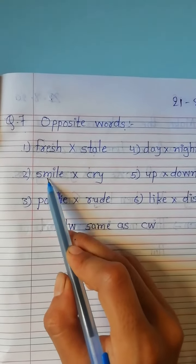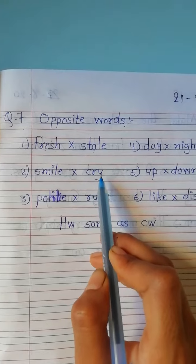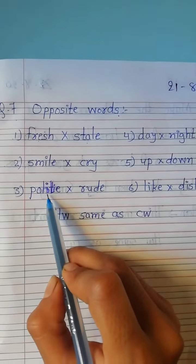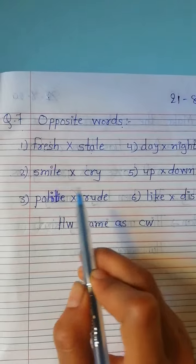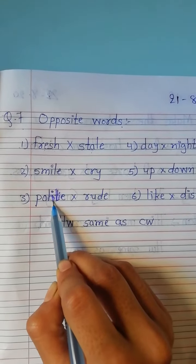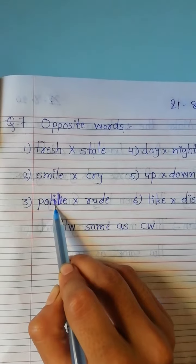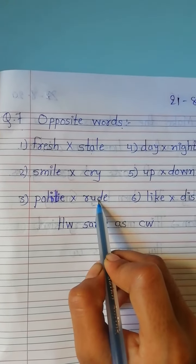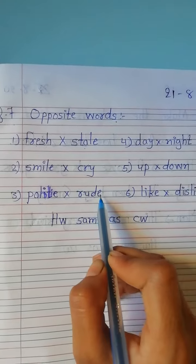Then next, smile. Smile's opposite is cry. Then next, polite. Polite opposite is rude. Polite means well mannered, like you talk with others softly, that is well mannered. Then next, rude. Rude means bad mannered.